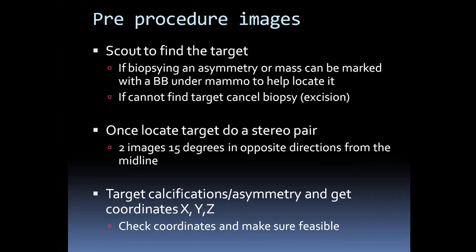We perform pre-procedure scout imaging once the patient is in compression to find the target, centered within the window, checking for nearby large vessels. If you have trouble finding the target, you can use a regular mammography machine to visualize the lesion — whether calcification or mass — and place a BB on it to help localize it before returning to the stereo room. If the target cannot be found, the biopsy is canceled. When a biopsy is canceled, the two options are to recommend surgical excision if malignancy suspicion is high, or a 6-month follow-up if risk is near 2% or low.